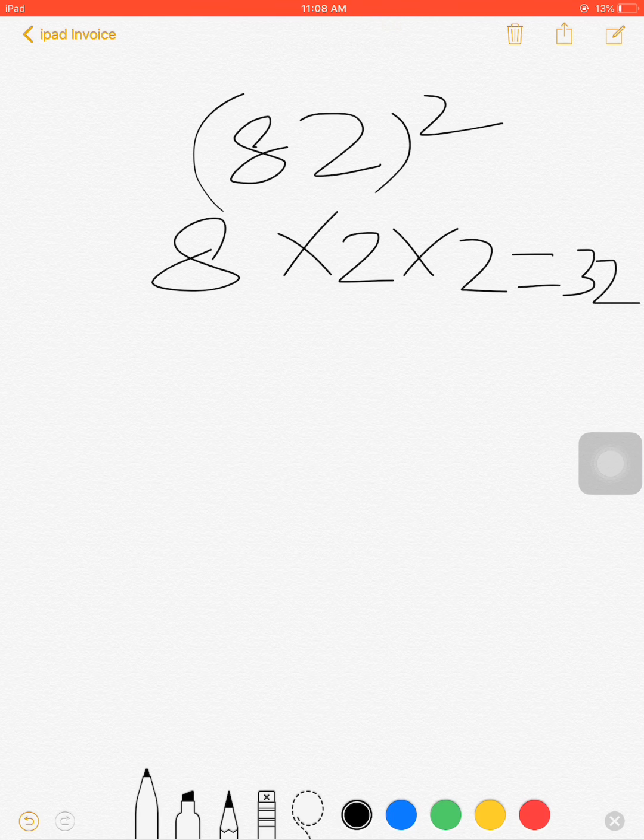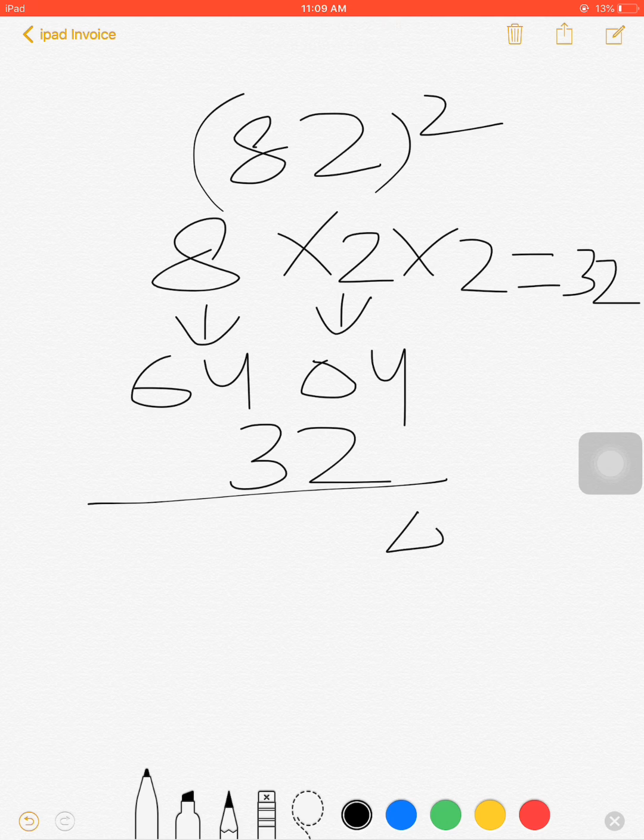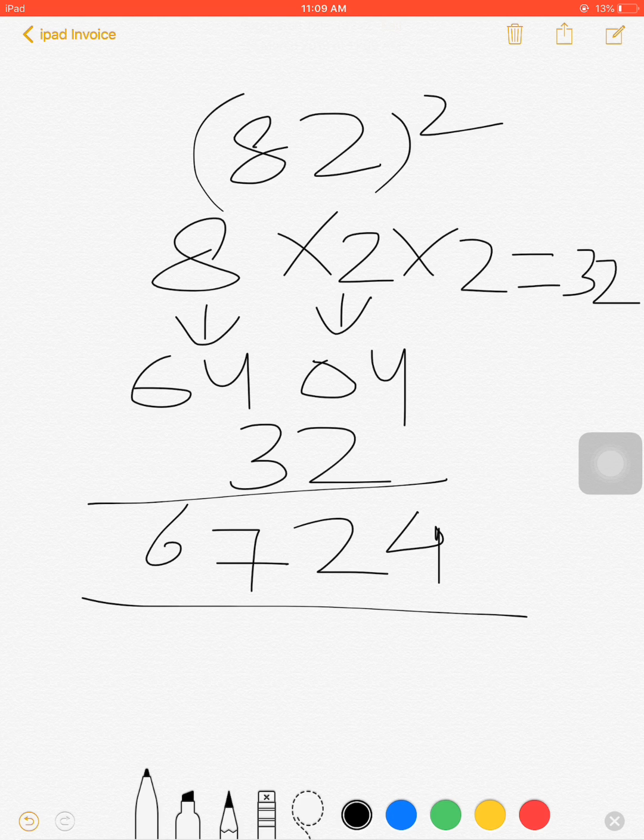First do the square of 8 - 8² is 64, and 2² is 4, so we will write 04. Now add this 32 by leaving the first digit from the right, so 32. So 4, 2, 7, 6. So 6724 will be the square of 82.